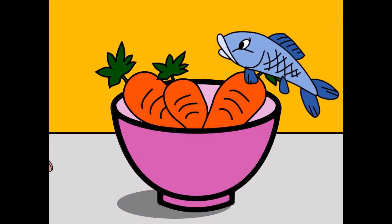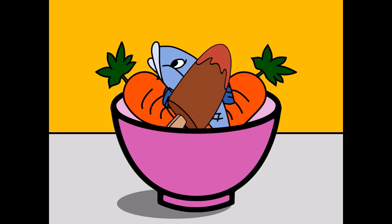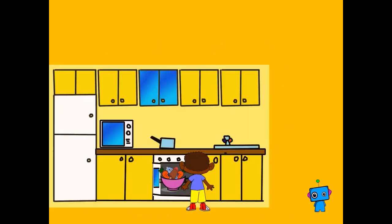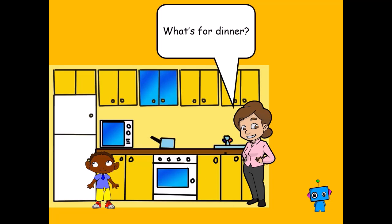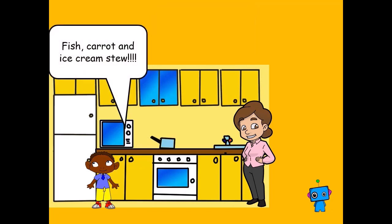Do you just go into the fridge and pick the first few things that you can find? Carrots, fish, ice cream? Then push it all into the oven and make a nice dinner. What's for dinner? Fish, carrot and ice cream stew. Yuck!